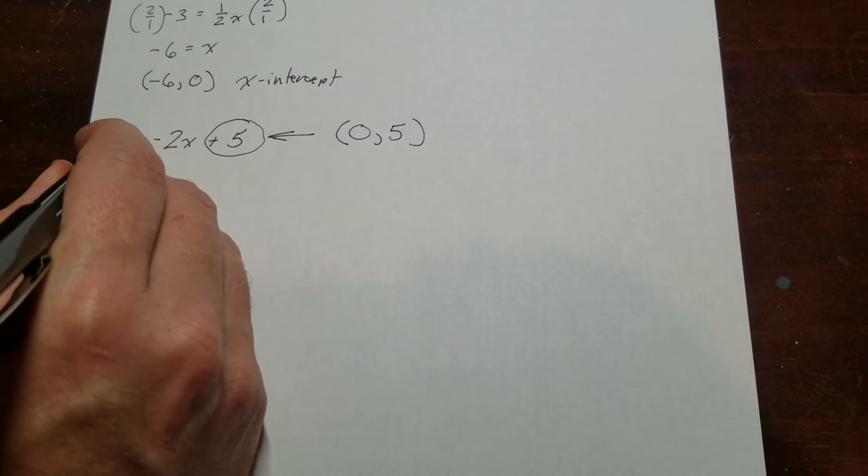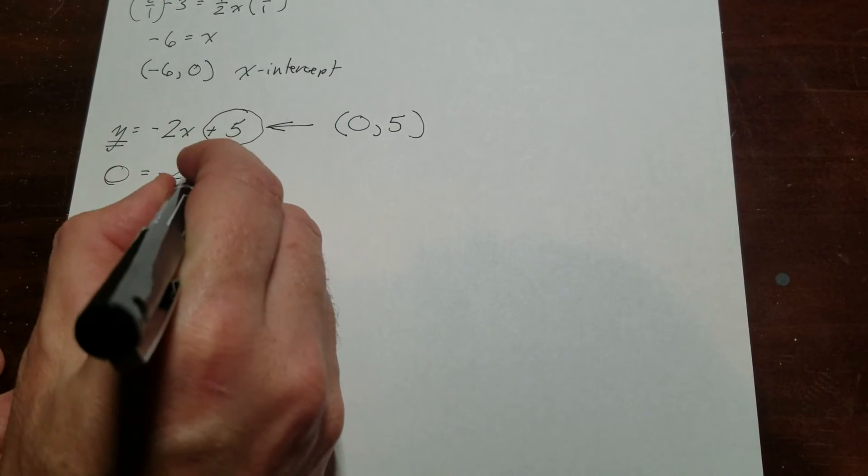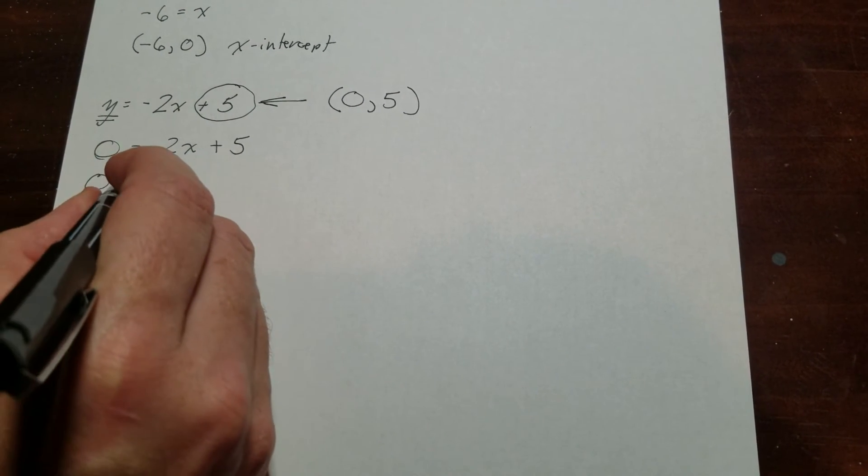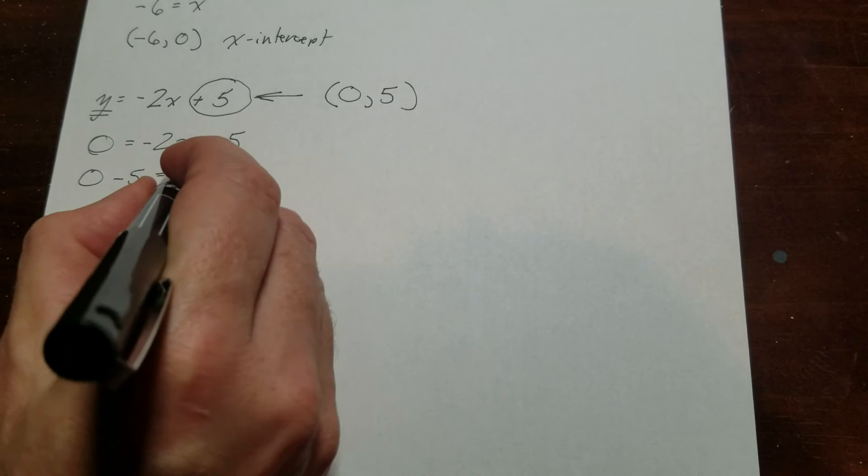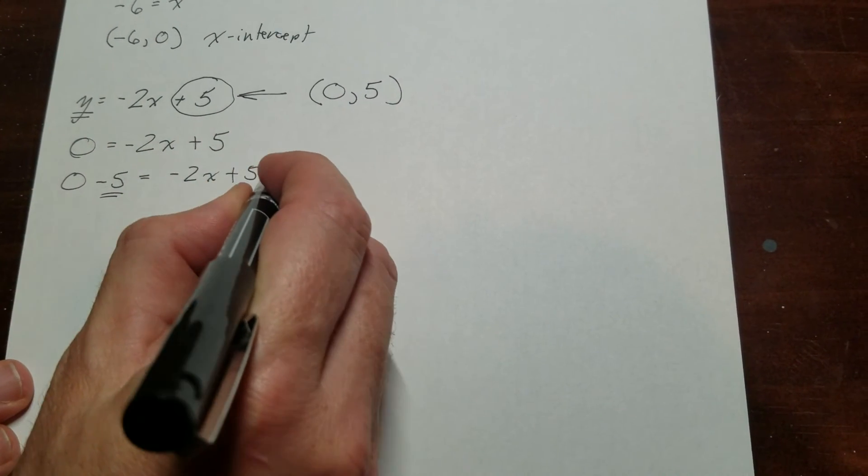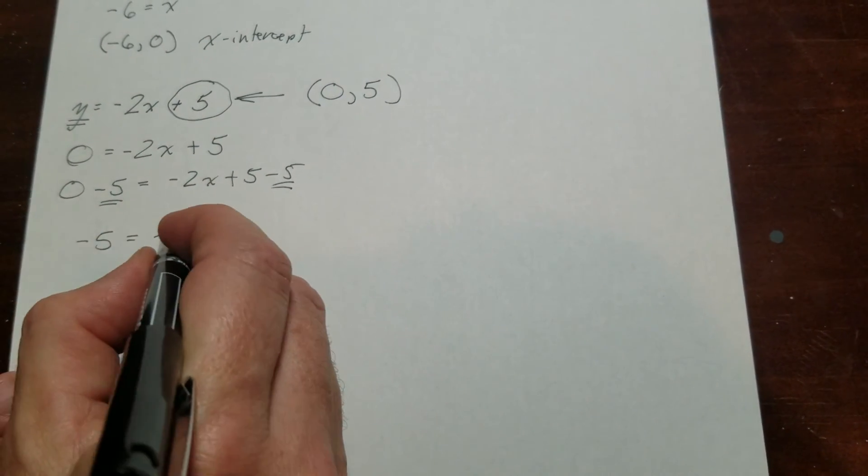So on this one right here, I'm going to set this y to 0. And then I'm going to write the rest of the equation out. And I'm trying to figure out x. So I'm going to do my additive inverse on the 5. Subtract that from both sides.